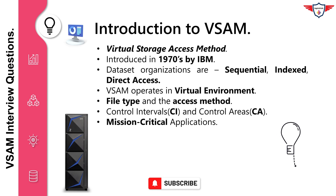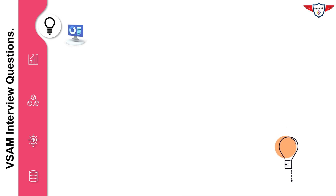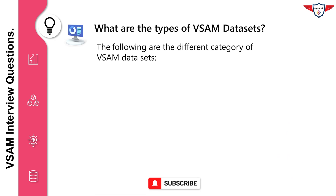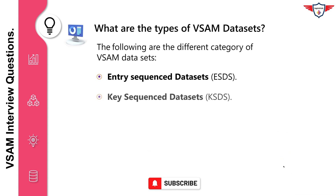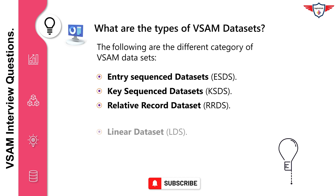But in other cases, there are full-featured mission-critical applications based on VSAM. Now let's get started with top 20 VSAM interview questions. What are the different types of VSAM datasets? The following are the different categories: Entry Sequence Datasets (ESDS), Key Sequence Datasets (KSDS), Relative Record Dataset (RRDS), and Linear Dataset (LDS).